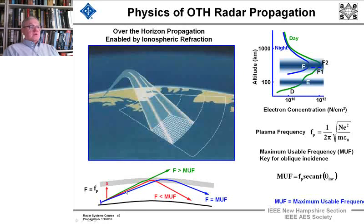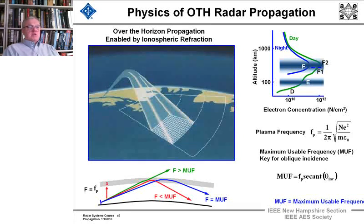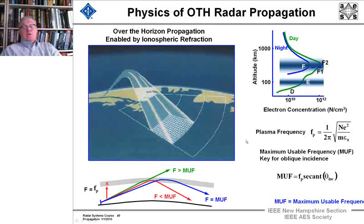Certain frequencies will bend to lesser ranges, and when you're at the maximum usable frequency of the radar, you'll get the farthest range. You might ask how you could contact communications much farther — you'll see that these distances are 100 kilometers and 1,000 kilometers. How could you transmit and receive signals from halfway around the world? You're able to do it with multiple bounces.